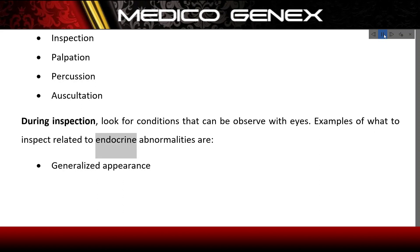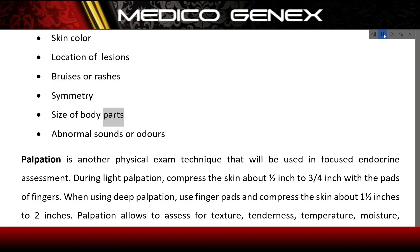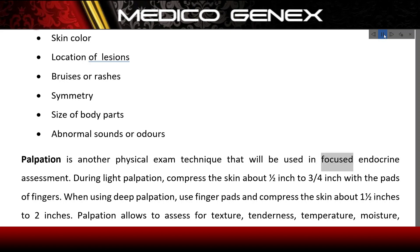Examples of what to inspect related to endocrine abnormalities include generalized appearance, skin color, location of lesions, bruises or rashes, symmetry, size of body parts, and abnormal sounds or odors.